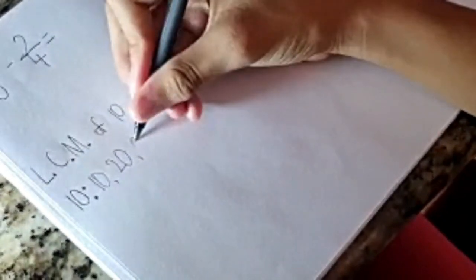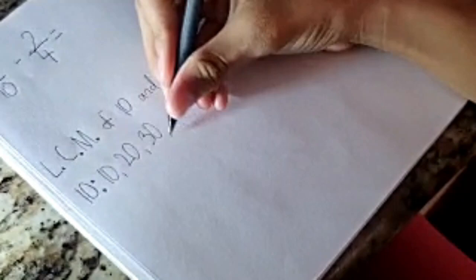So, for the number 10, the multiples of 10 are 10, 20, 30, and 40.